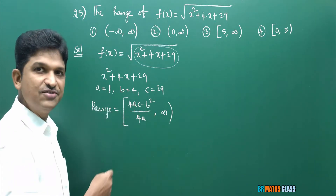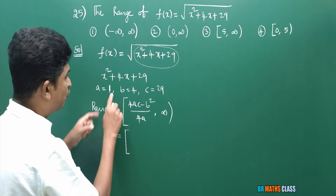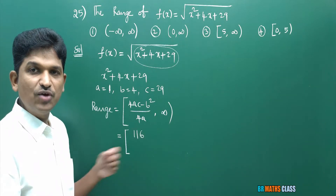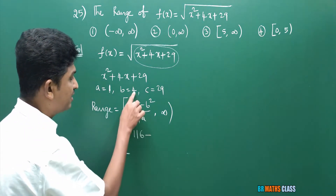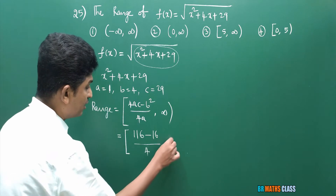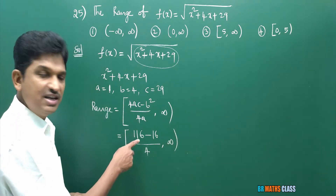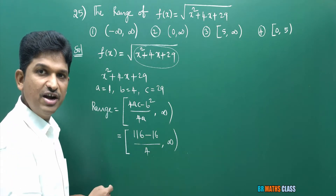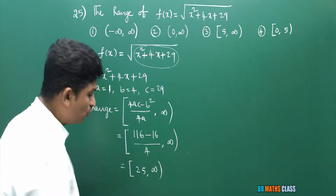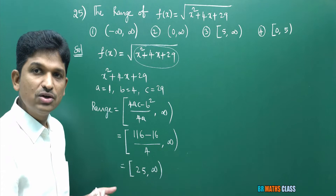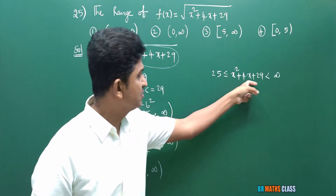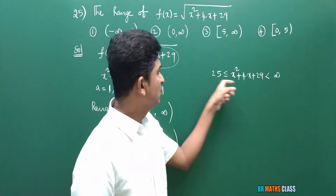Now I will substitute these ABC values. 4AC is 4 into 1 into 29, which is 116. Minus B square is minus 16. Divided by 4A, which is 4 into 1, that is 4. So 116 minus 16 is 100. 100 divided by 4 is 25. So the inner expression gives the interval [25, infinity). This tells us that x square plus 4x plus 29 lies between 25 and infinity.